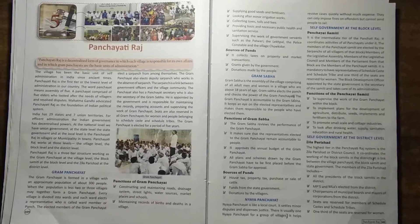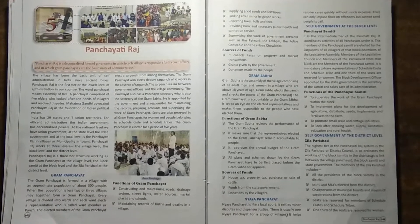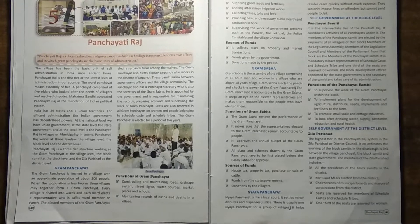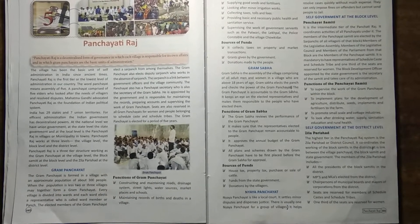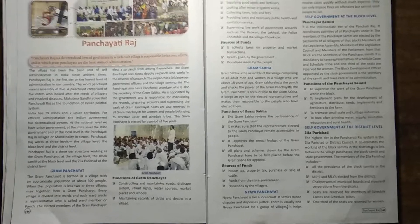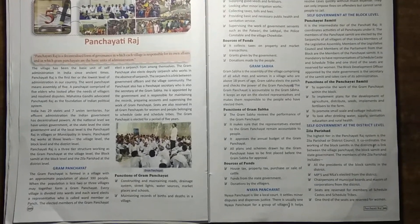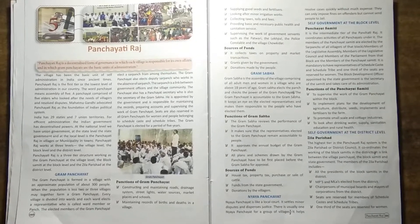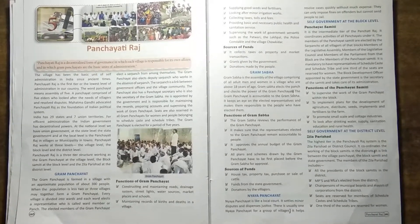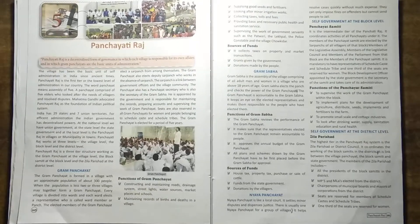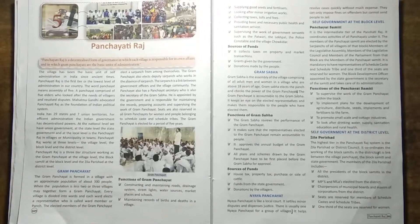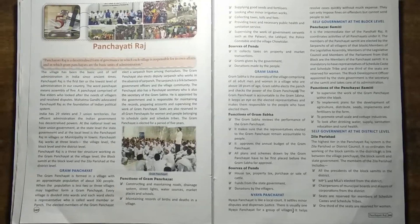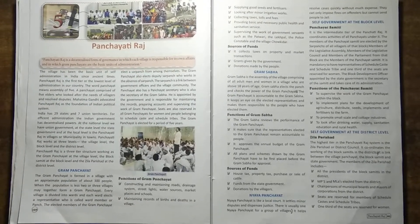Good morning students. Today we will learn about Panchayat Raj. The village has been the basic unit of self-administration in India since ancient times. Panchayat Raj is the first tier or the lowest level of administration in our country. The word Panchayat means assembly of five. The Panchayat comprises of five elders who look after the needs of villages and resolve disputes. Mahatma Gandhi considered Panchayat Raj as the foundation of the Indian political system.